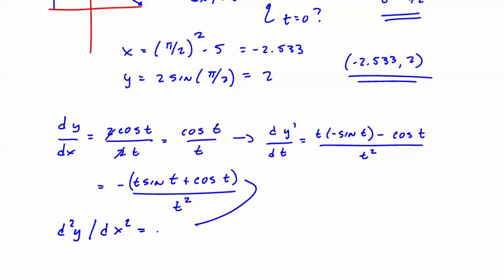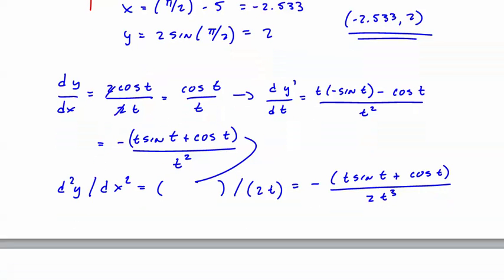Equals this, which I'm lazy, divided by dx/dt, which is 2t. And that gets you -t sin(t) + cos(t) over 2t³. And then the question is, graph that and find a sign change. And if you do, you'll say it happens at t = 2.798. And if you plug that back in, you'll find there's a point of inflection at (2.831, 0.673).